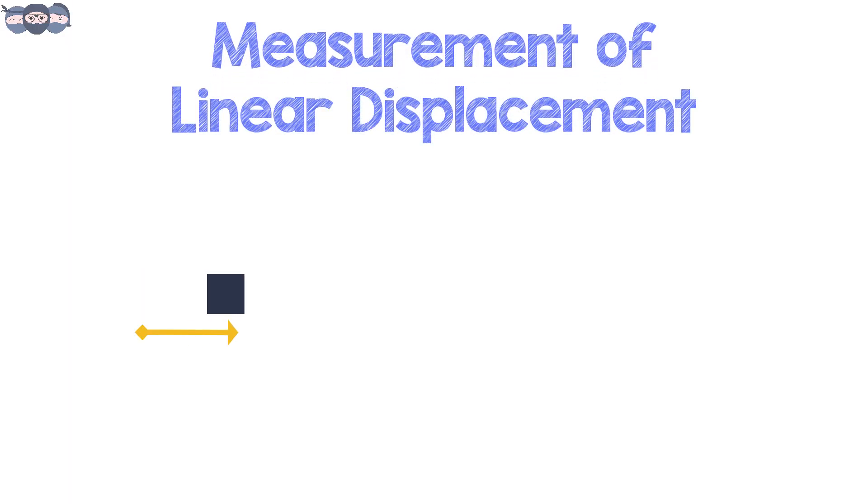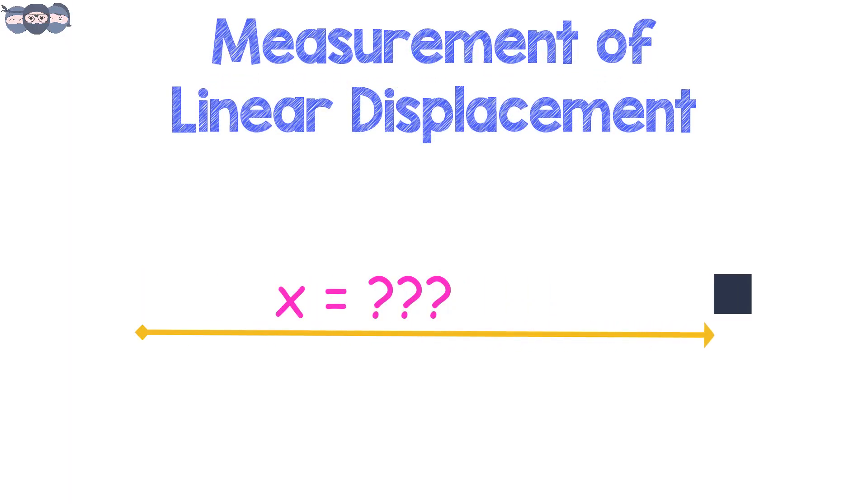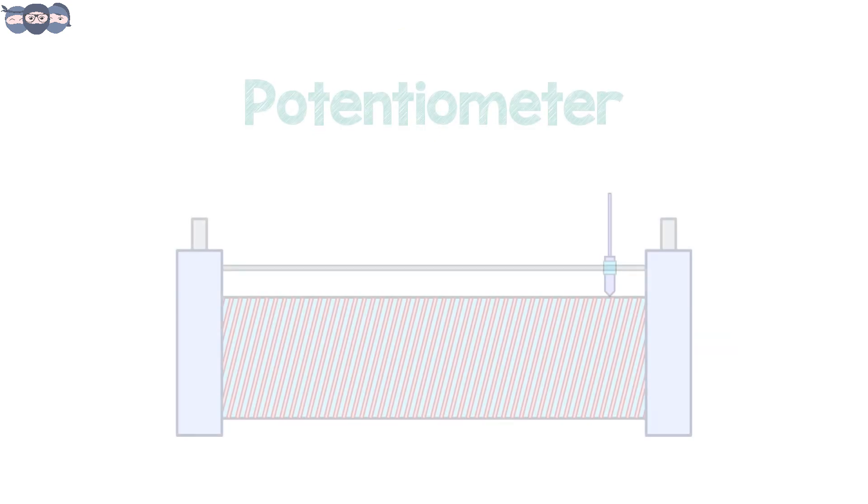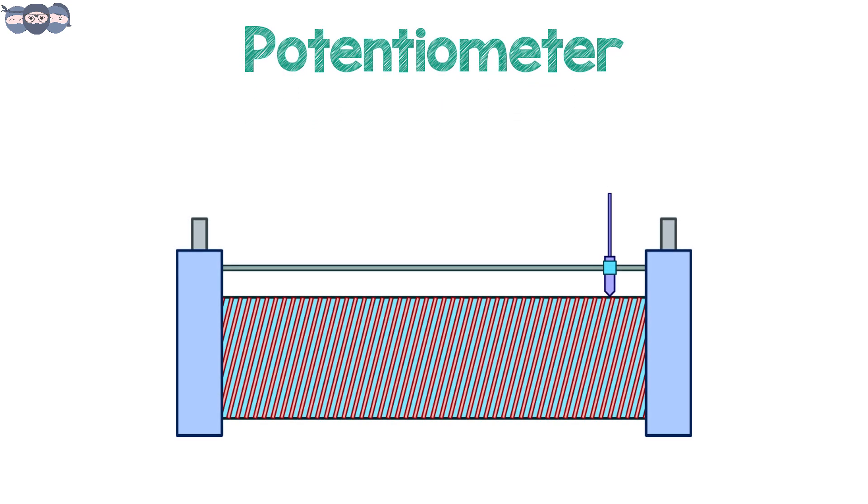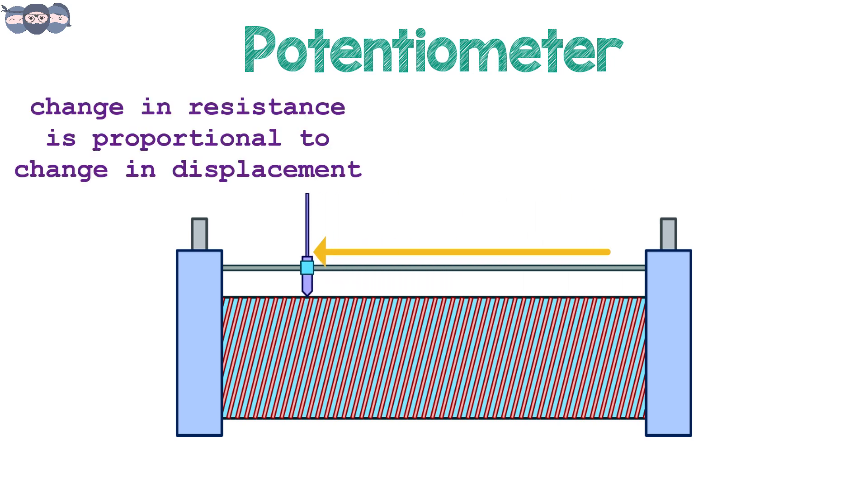Let us start by understanding the technique for measurement of linear displacement. The sensor used for this purpose is the potentiometer. The principle of operation is that the change in displacement is mapped to change in resistance.